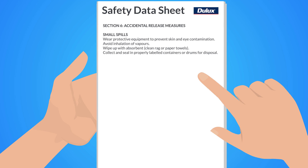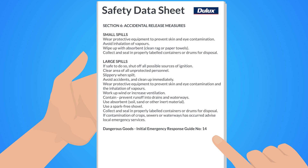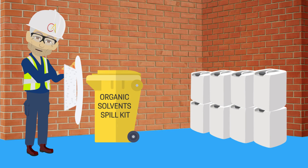Section 6 gives advice on how to handle a leak, spill, or accidental release of a substance. This information starts with tips on handling a small spill. Next, information on handling a large spill is provided, including the required PPE, equipment, and techniques. If handling large quantities, ensure a suitable spill kit is always on hand.